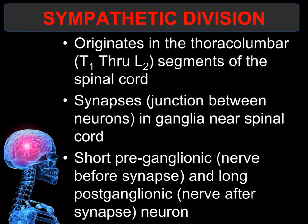In the sympathetic division, the ganglia is near the spinal cord. This means that the two nerves involved in the autonomic nervous system — the preganglionic nerve, which is the one that comes before the ganglion, and the postganglionic nerve, which comes after the ganglion — in the sympathetic division, there is a short preganglionic nerve and a long postganglionic nerve.